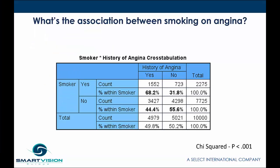Let's take a moment to look at this crosstab. I've emboldened some of the percentage values so we can compare the correct groups. We can see that 68.2% of smokers in the sample have a history of angina compared to 44% of the non-smokers. This is statistically significant — not just at the 0.05 level, not just at the 0.01 level, but the probability is actually less than 0.001. So a pretty big difference.